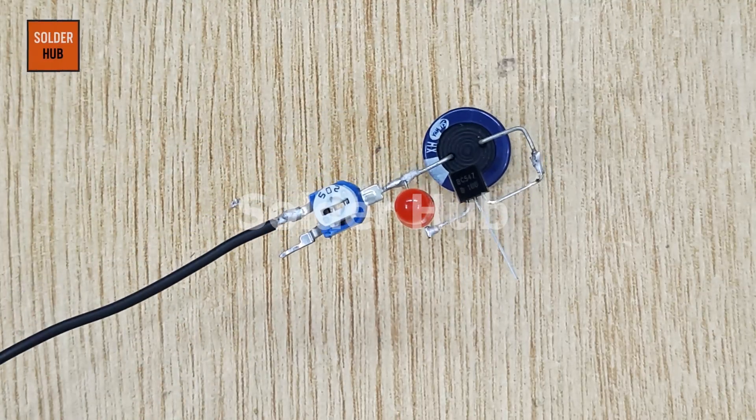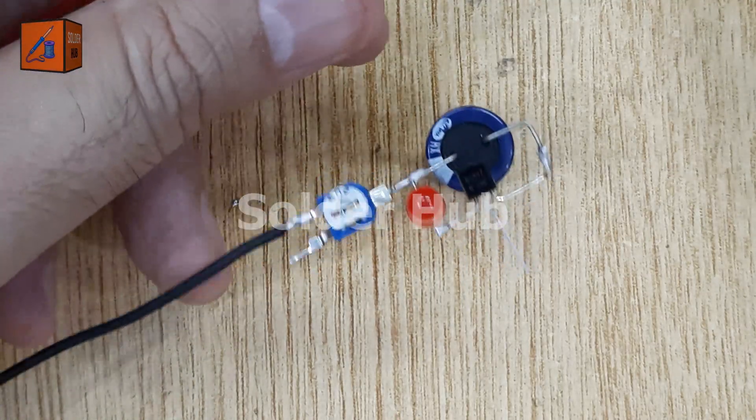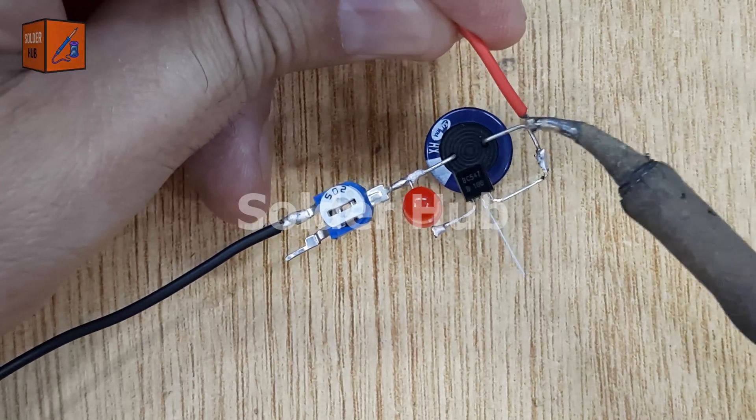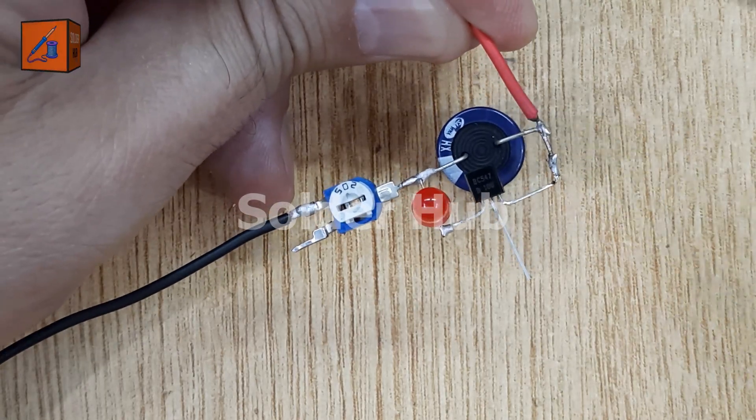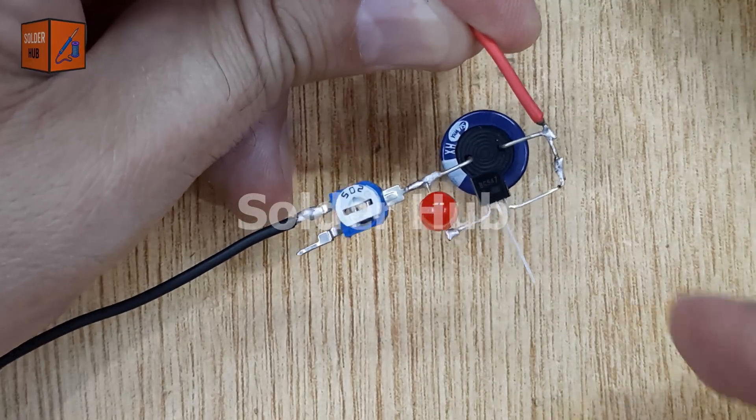Finally, I solder the positive wire from the 12-volt battery to the positive terminal of the capacitor to power the entire circuit. With all connections made, the circuit is now complete and ready for testing.